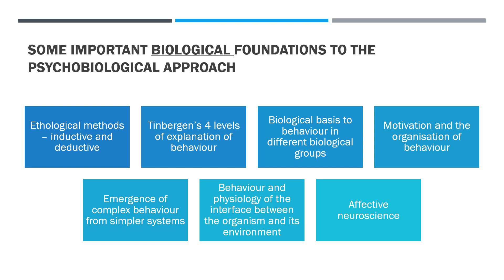What is critical to this process is that we need to understand how psychological and biological processes normally function, including internal inferences about psychological state such as the emotion of the animal or what the animal might be thinking at that particular time — but that does not mean that we're being anthropomorphic. From the biological perspective, some of the key foundations include the ethological methods, both inductive and deductive. Typically ethology starts with description of behaviour and then hypotheses which are tested. It's important that we understand Tinbergen's four levels of explanation of behaviour: the function or adaptive value, its evolution or phylogeny, its causation or underlying mechanisms, and its development or ontogeny.